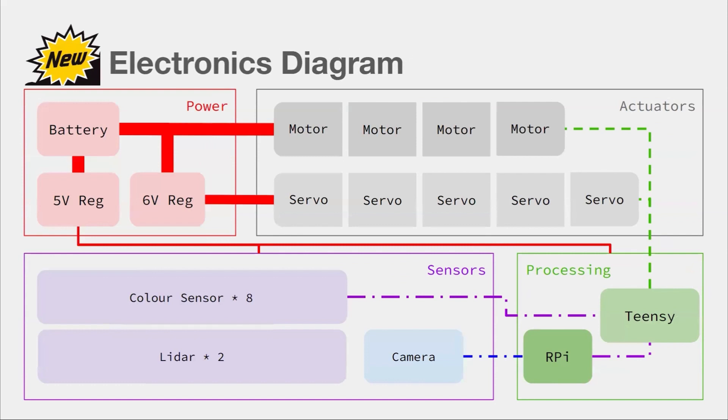So this is what our electronics diagram looks like. It's a 12V battery regulated into 6V and 5V to power everything. The camera feed is processed by the RPi into more useful output, which is sent to the Teensy, and the other sensors also send data to the Teensy, which controls the actuators.